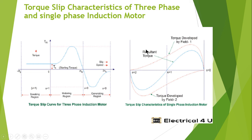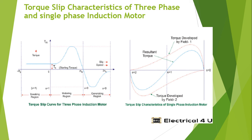The curve shows the resultant torque for a single-phase induction motor, the torque developed by field 1, and the torque developed by field 2, which follow different paths with respect to slip. Now let us discuss the torque-slip characteristics in detail. The first curve is the torque-slip curve for a three-phase induction motor.